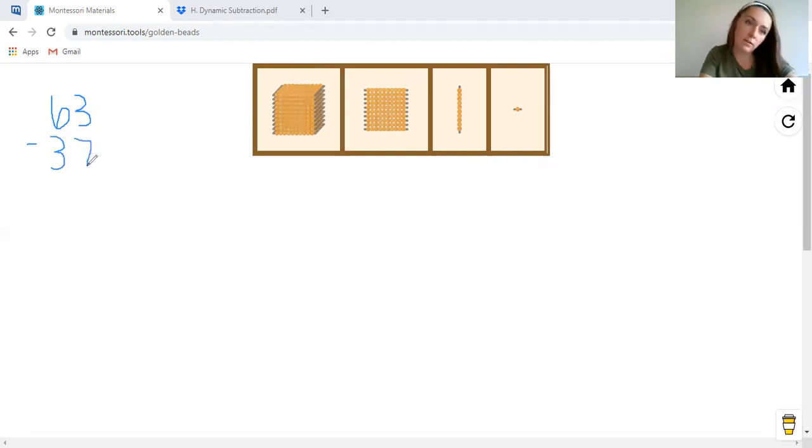So for subtraction, you're only going to set up your top number. So we have got our unit beads, our 10 bars, our hundred squares, and our thousands cubes.